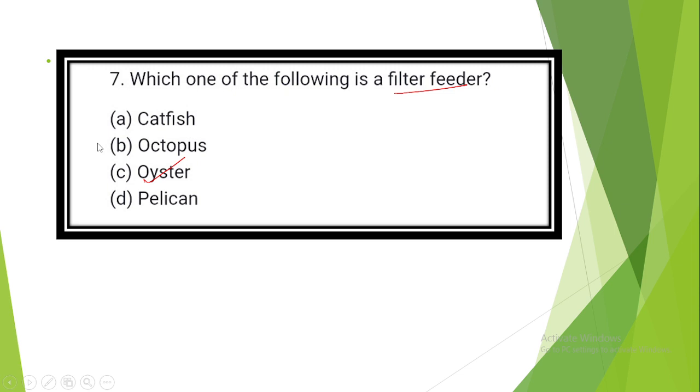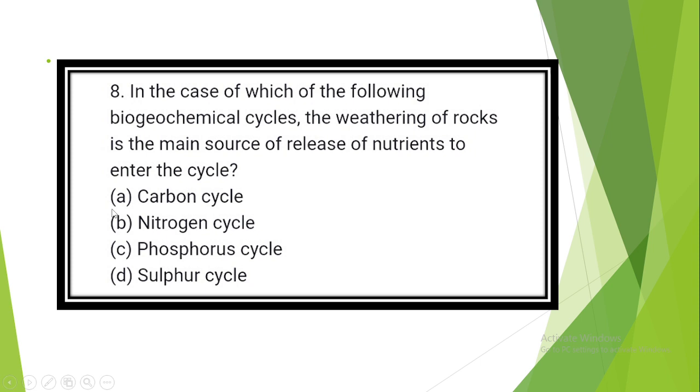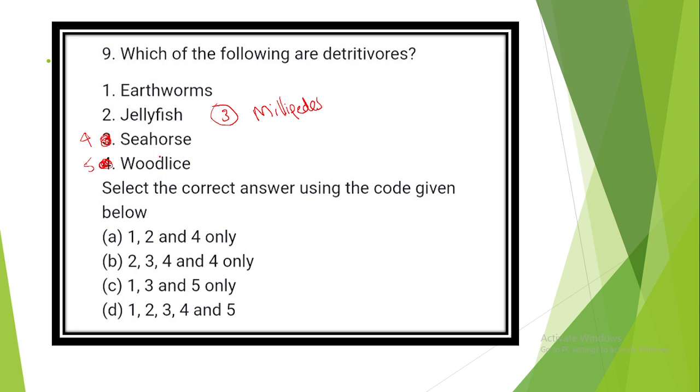Question number 8. In case of which of the following biochemical cycles is weathering of rocks the main source of release of nutrients under the cycle? The answer is Option C: Phosphorus cycle. Question number 9. Which of the following are detritivores?